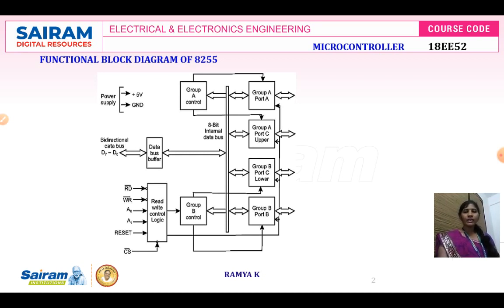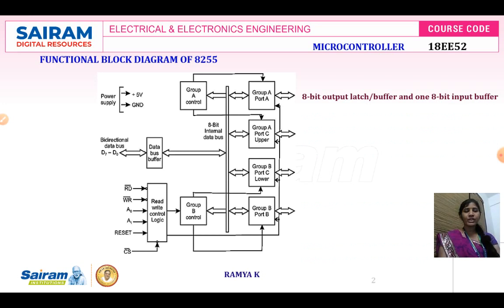Looking at the block diagram, it basically comprises three IO ports: Port A, Port B, and Port C. Port A and Port B are 8-bit ports, whereas Port C is also an 8-bit port when both lower and upper are joined together. Port C has been split as Port C lower and Port C upper. It is an 8-bit port which can latch both input as well as output, and it is also used for storing data.